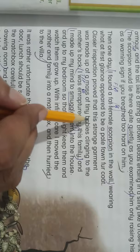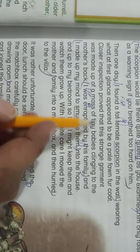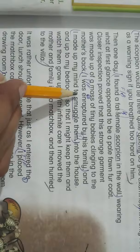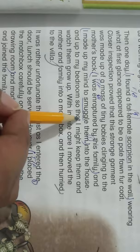Closer inspection proved that this strange garment was made up of a mass of tiny babies clinging to the mother's back. I was enraptured by this family and made up my mind to smuggle them.